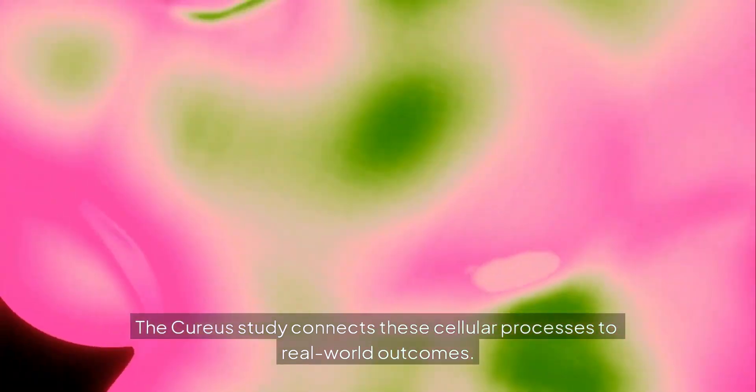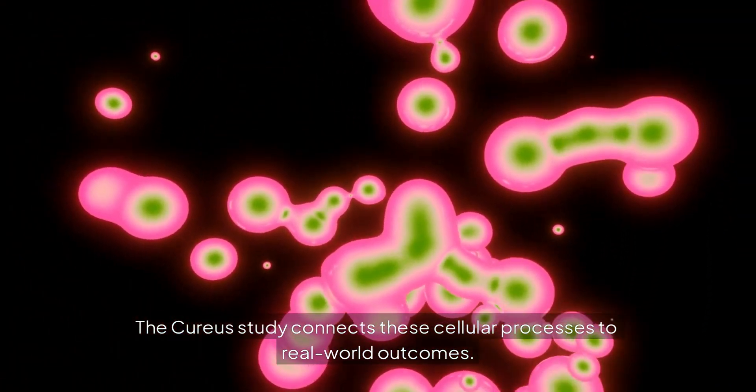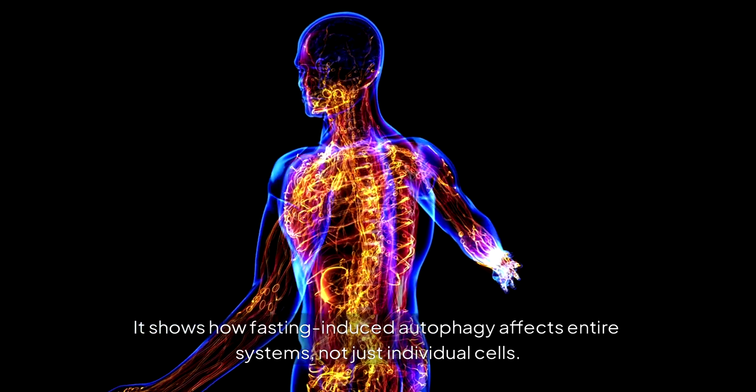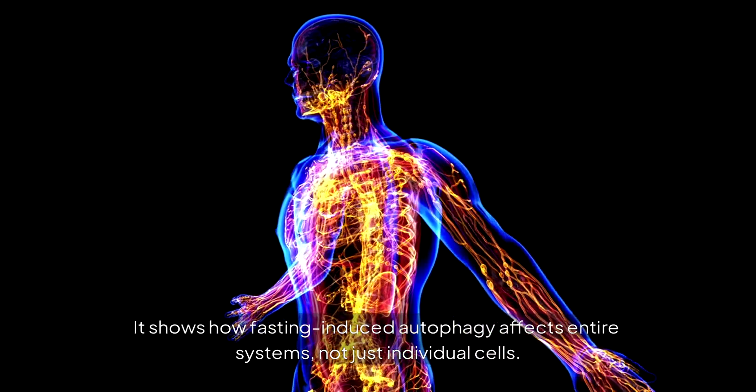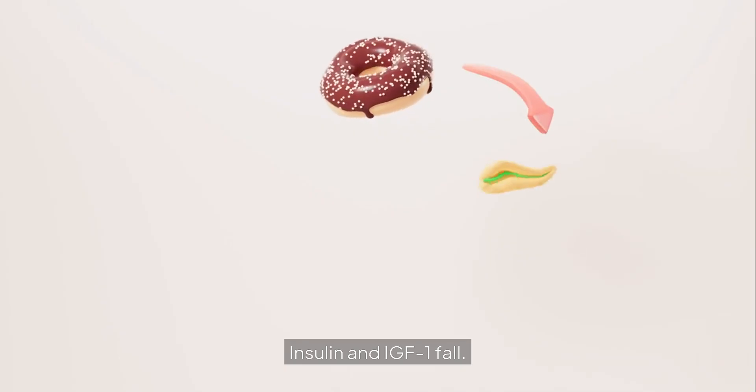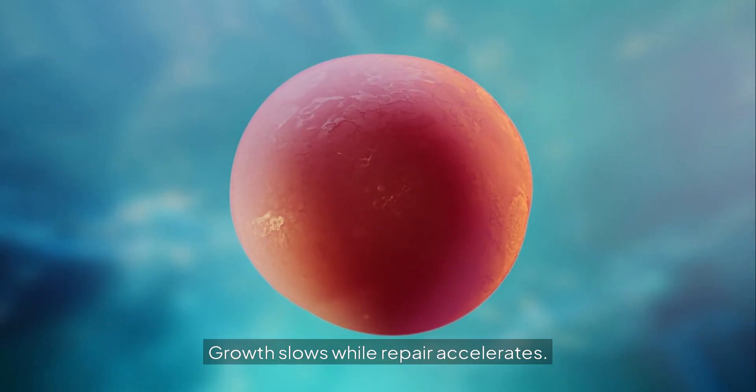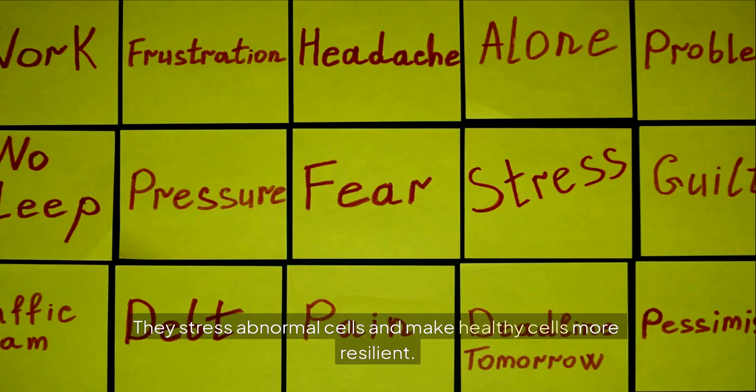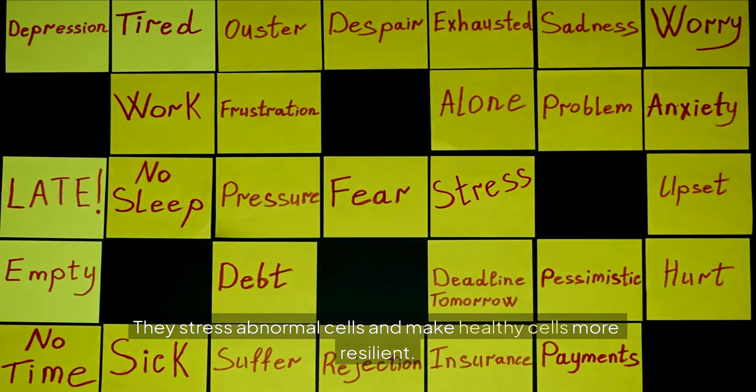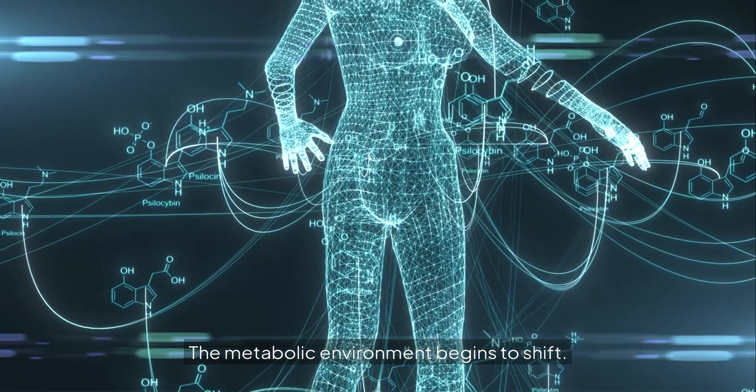The CURIOUS study connects these cellular processes to real-world outcomes. It shows how fasting-induced autophagy affects entire systems, not just individual cells. Hormonal patterns change. Insulin and IGF-1 fall. Adiponectin increases. Growth slows, while repair accelerates. These conditions do not favor cancer. They stress abnormal cells and make healthy cells more resilient. The metabolic environment begins to shift.